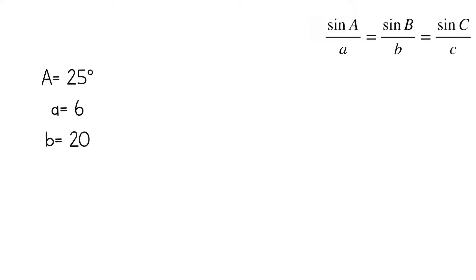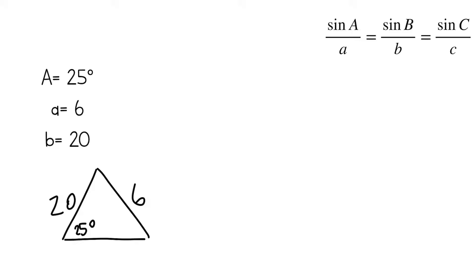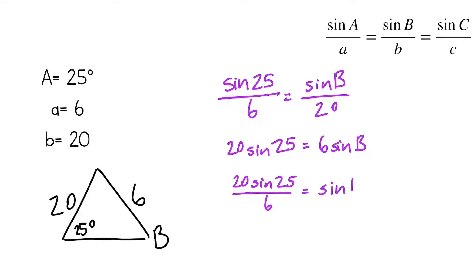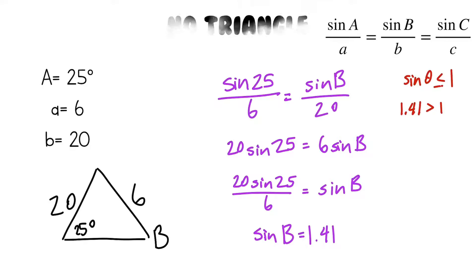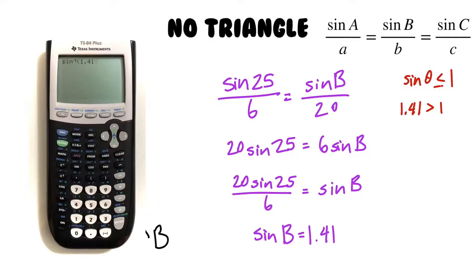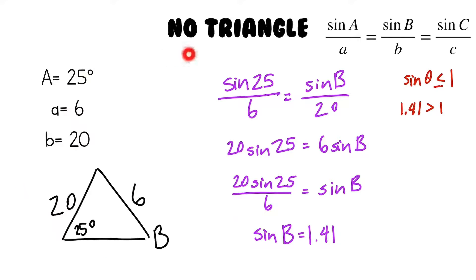Let's take a look at another example: A is 25 degrees, side A is 6, and another side is 20. I'll quickly draw another triangle and use the law of sines to find angle B. I get sine B equals 1.41. But remember, sine of an angle is always less than or equal to 1, and 1.41 is bigger than 1. So if you tried to plug inverse sine of 1.41 into your calculator, you'd just get error. That means no triangle. Basically, if something you got makes no sense, then there is no triangle.